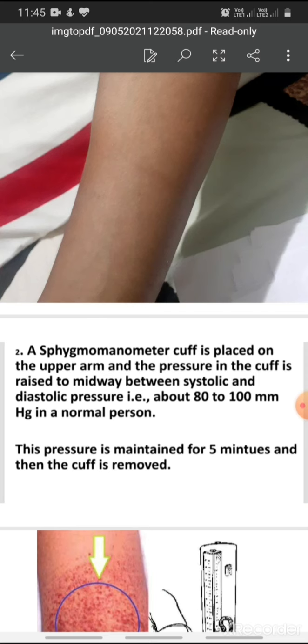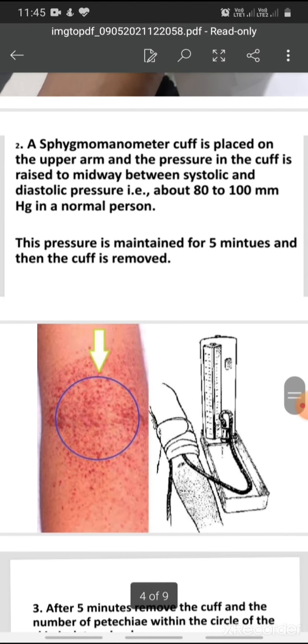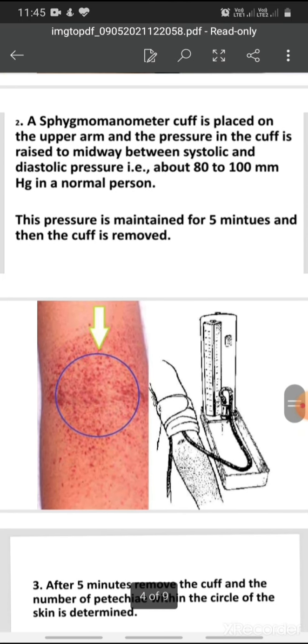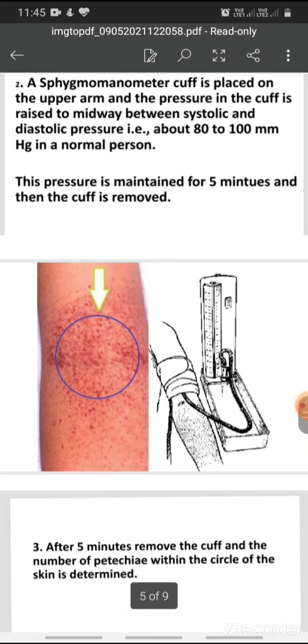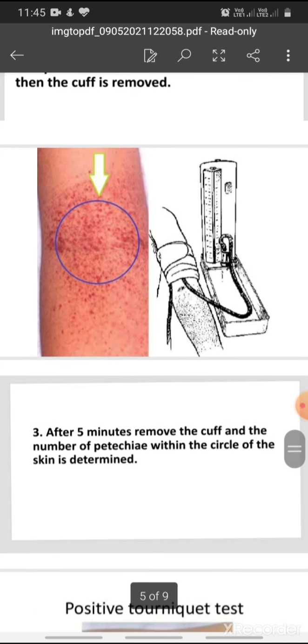This pressure is maintained for 5 minutes. After 5 minutes we have to remove the cuff. After 5 minutes, remove the cuff and the number of petechiae within the circle of the skin is determined.